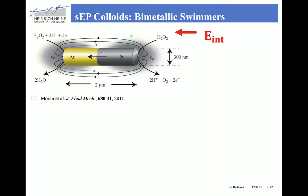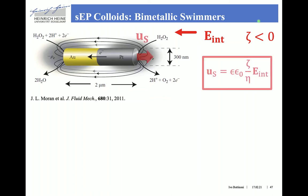Since the rods have a net negative surface charge — a zeta potential smaller than zero — according to electrophoretic transport, the slip velocity self-propels the particle towards the platinum segment. The slip velocity is given by this formula, where the electric field is now internal and depends on the distance between the two clouds of counter-ions, which is roughly equal to the length of the rod, and also on the Debye layer thickness.